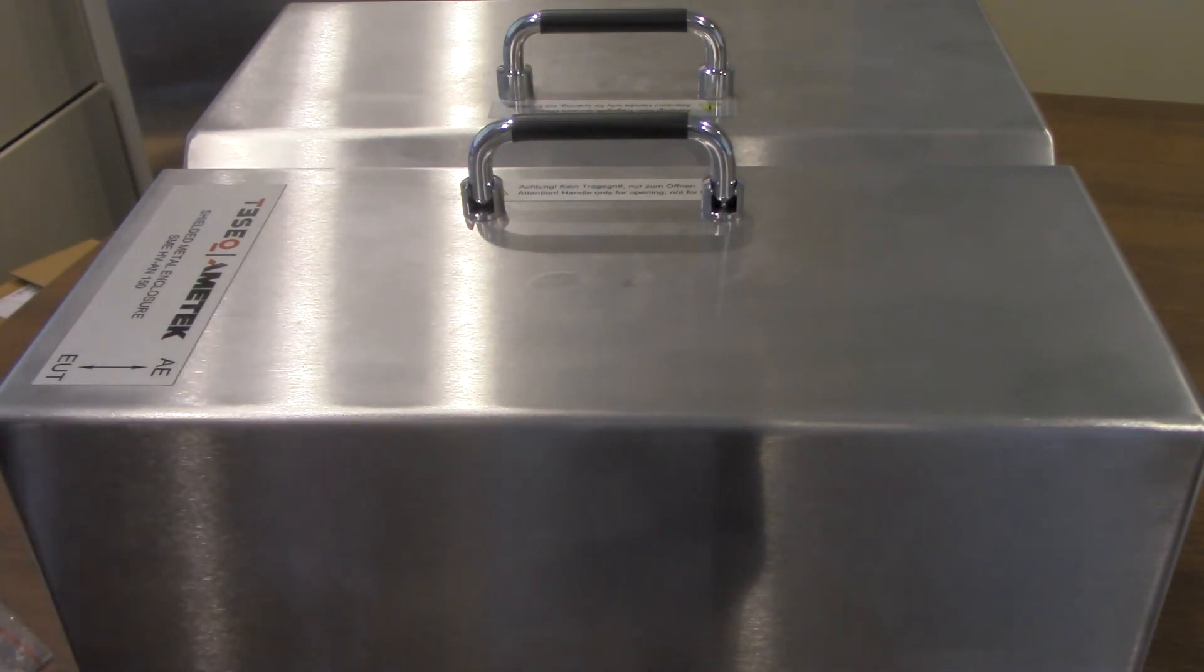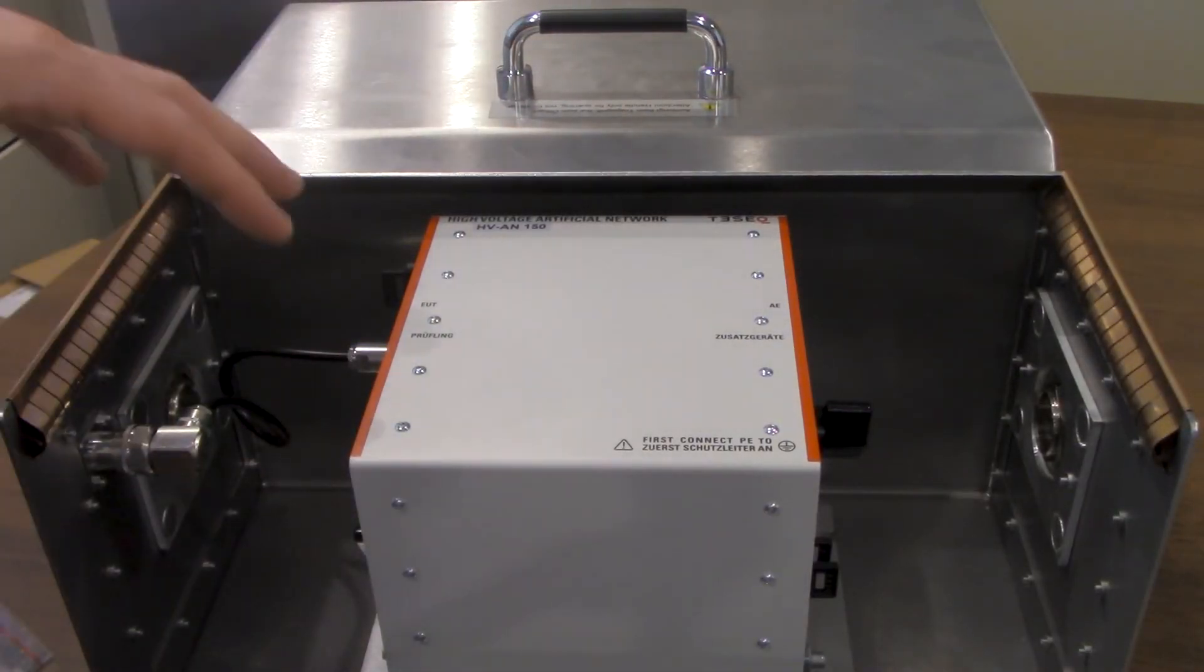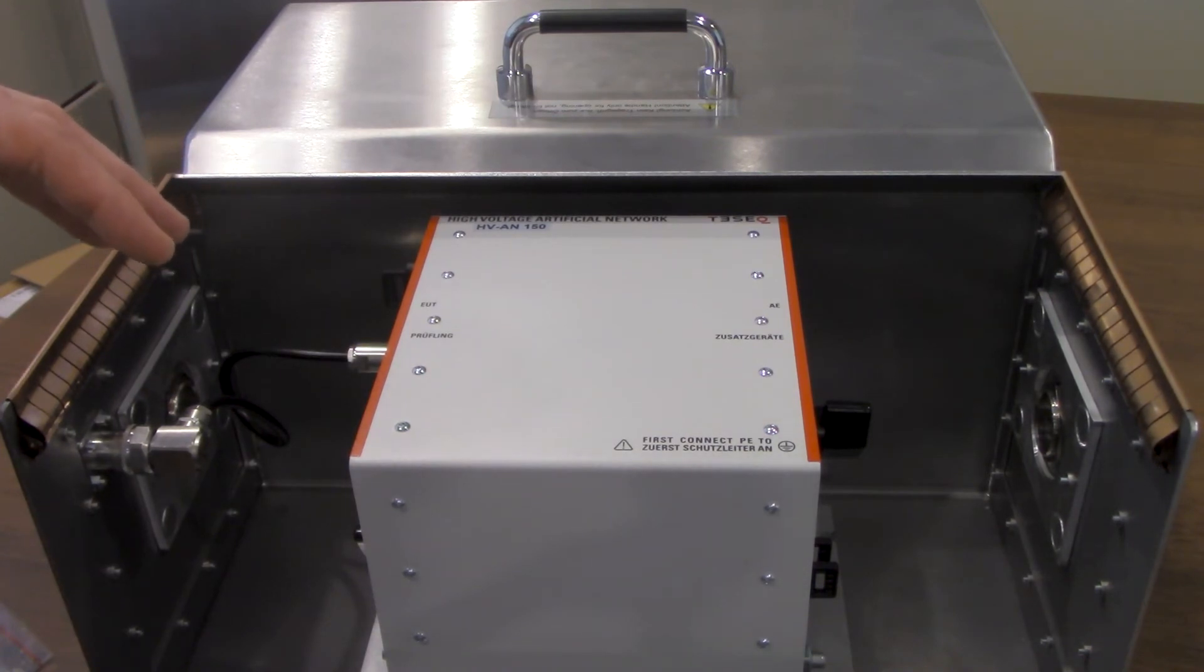Now let's go ahead, we're going to get the HVAN 150, we're going to disconnect it from our shielded metal enclosure and we're going to show you how to make some connections for DO 160 including putting in the 10 microfarad capacitor.